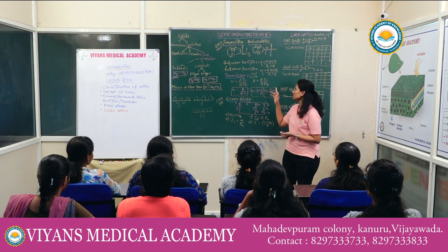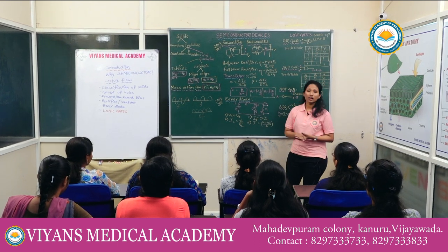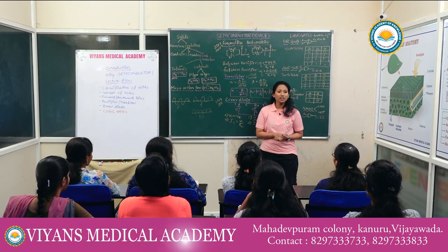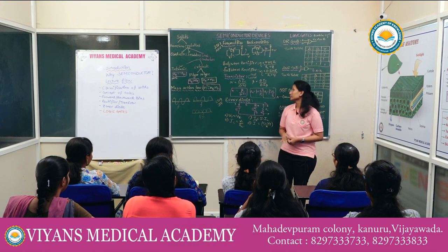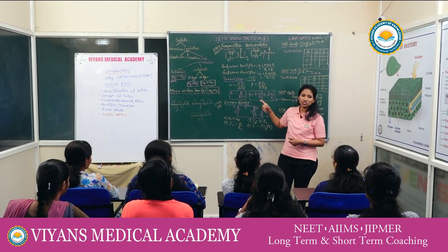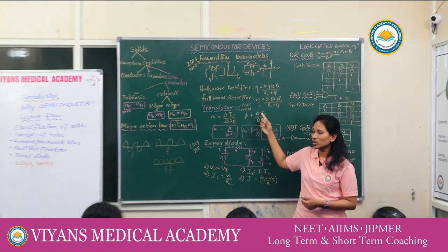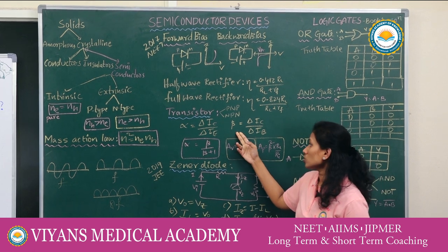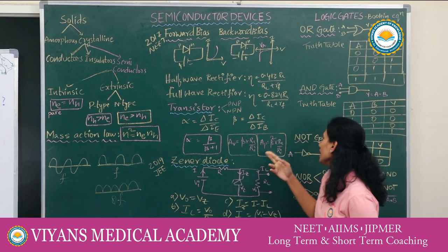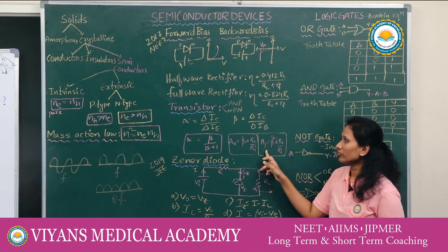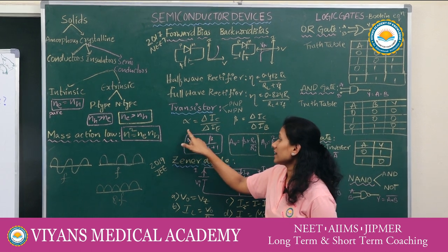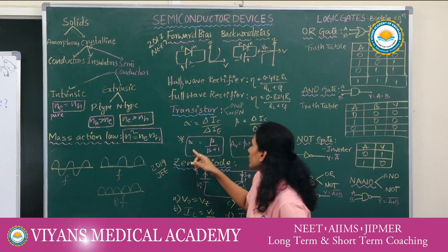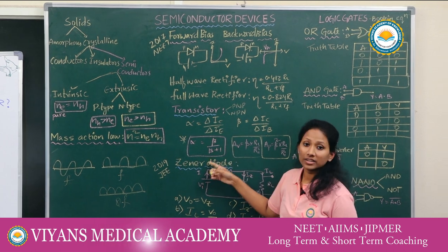In a transistor, the lightly doped base is sandwiched between the heavily doped emitter and the intermediately doped collector. Transistors are of two types: PNP and NPN. We can calculate the current, voltage, and power amplification using standard formulae. The important relation between alpha and beta is: alpha = beta / (beta + 1).